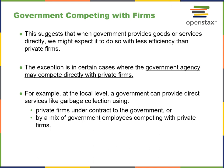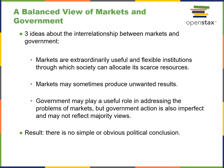A balanced view of markets and government presents three ideas on how they interrelate: markets are extraordinarily useful, flexible institutions through which society can allocate scarce resources; markets may produce unwanted results; and government may play a useful role in trying to mediate this. The result is there's no simple or obvious political conclusion. End of Chapter 18.